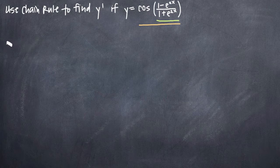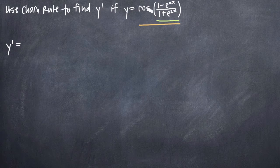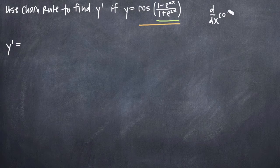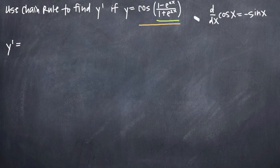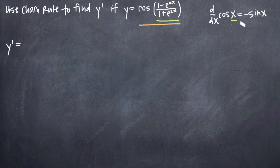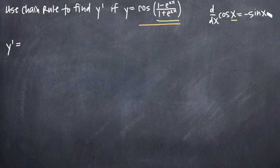So let's talk about what this is going to look like. If we take the derivative of y, we're going to denote it as y prime. You know that the derivative of cosine of x is negative sine of x. Well, in this case, we have cosine of x, except that x here is this large inside function: 1 minus e to the 2x over 1 plus e to the 2x. When we take the derivative of cosine of x, we get negative sine of x, and x here on the left-hand side stays exactly the same — it stays inside that function.